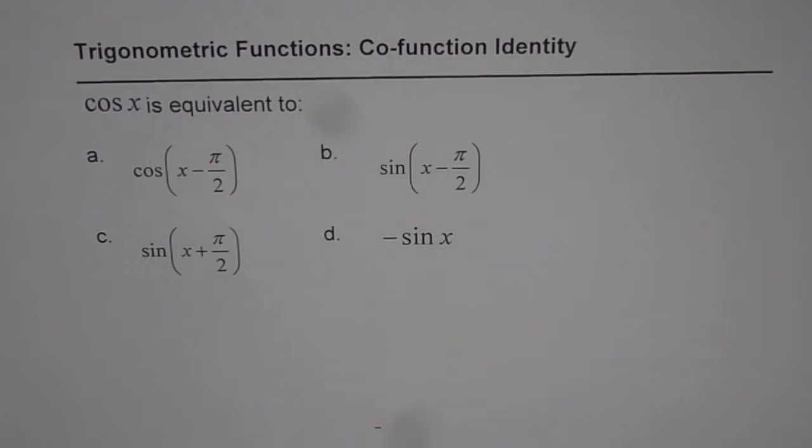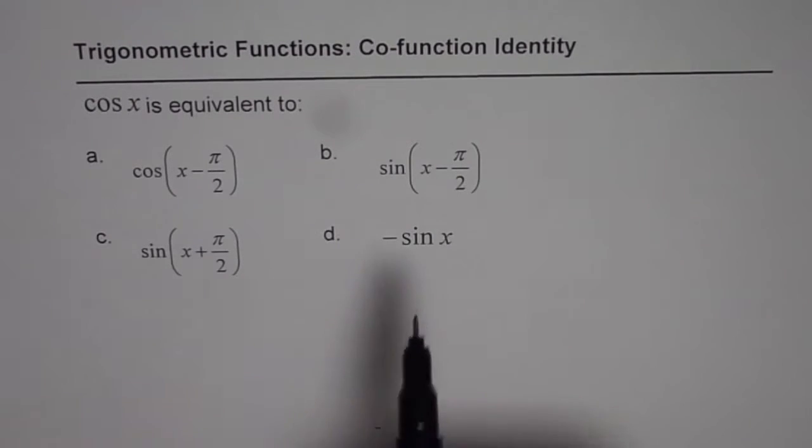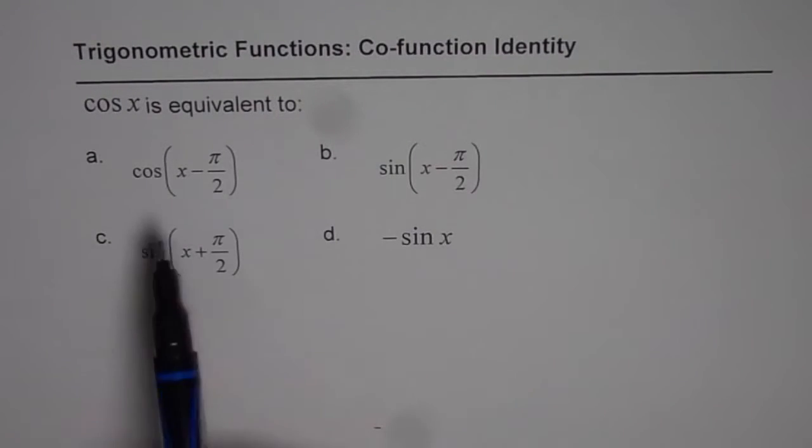We're going to discuss trigonometric functions and co-function identity. The question is: cos x is equivalent to which one of these four - cos(x - π/2), sin(x - π/2), sin(x + π/2), or -sin x.